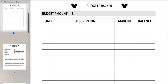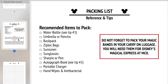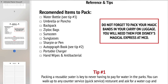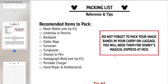The next thing we're going to talk about is packing for your Disney vacation. I included a packing list with some tips so you don't forget certain things. I have your recommended items to pack — things that I personally recommend you make sure you bring with you. I also wanted to highlight that you don't forget to pack your magic bands in your carry-on luggage because you need them for Disney's Magical Express at the airport. I also have tips on packing a reusable water bottle and pre-purchasing items.